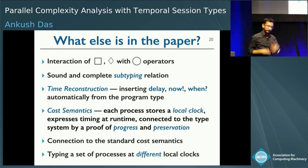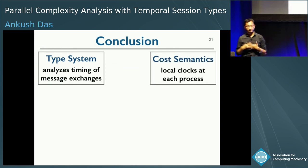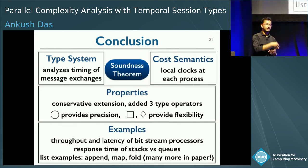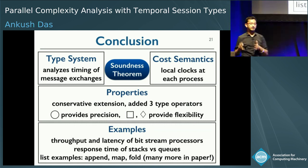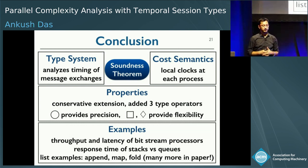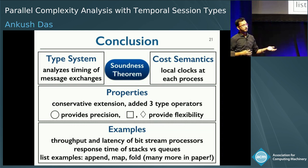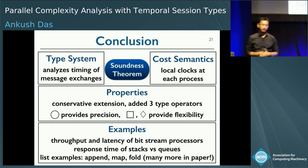To conclude: today we saw a type system for analyzing the timing of message exchanges among processes in a session type system, connected to the cost semantics by a soundness theorem. It was a conservative extension adding three type operators — circle for precision, box and diamond for flexibility. We looked at stream processors and their throughput and latency, did an efficiency comparison between stacks and queues, and there are many more examples in the paper.